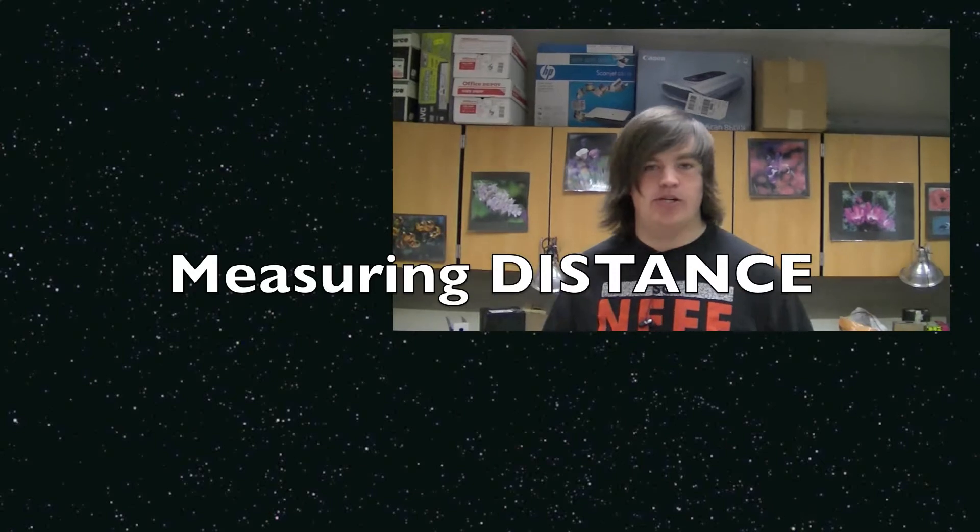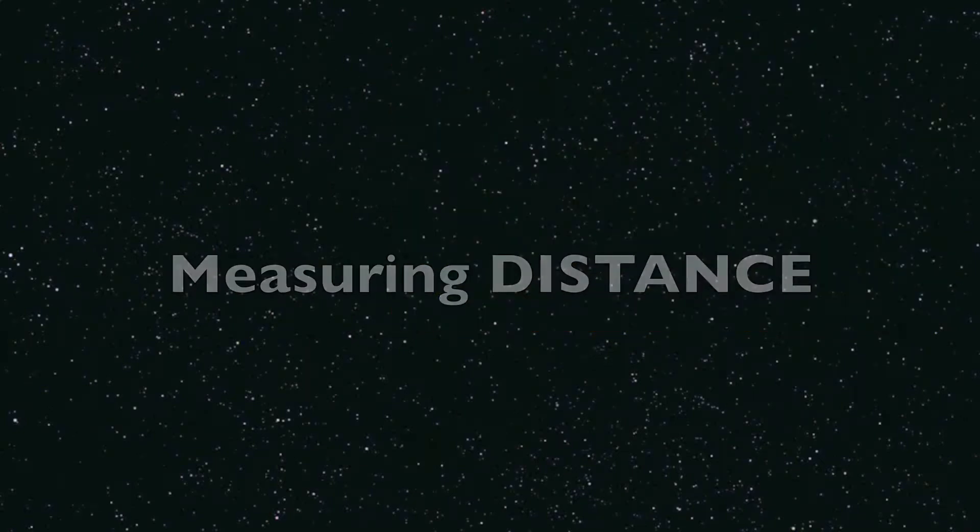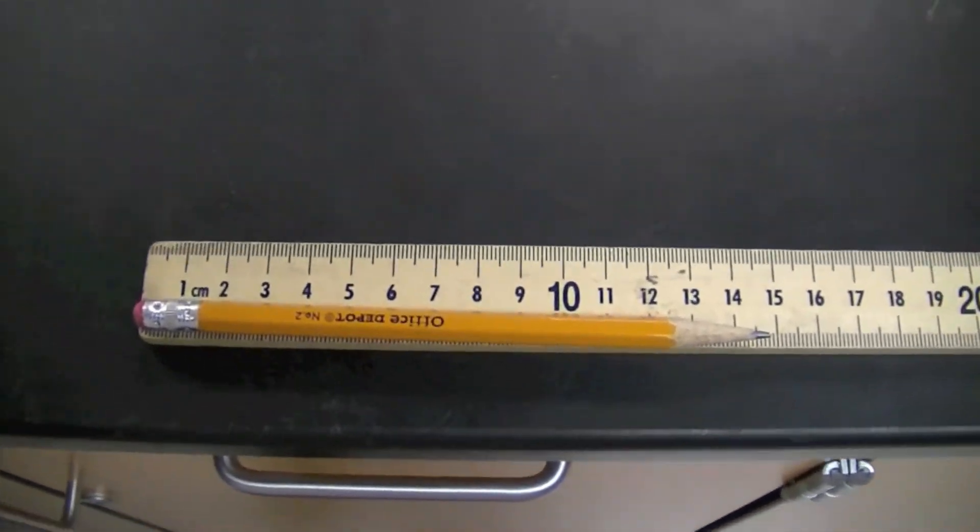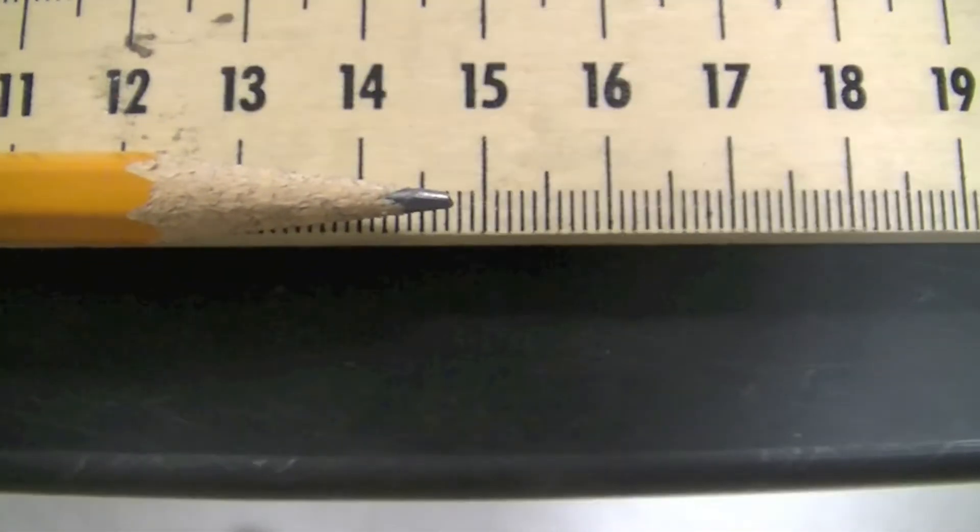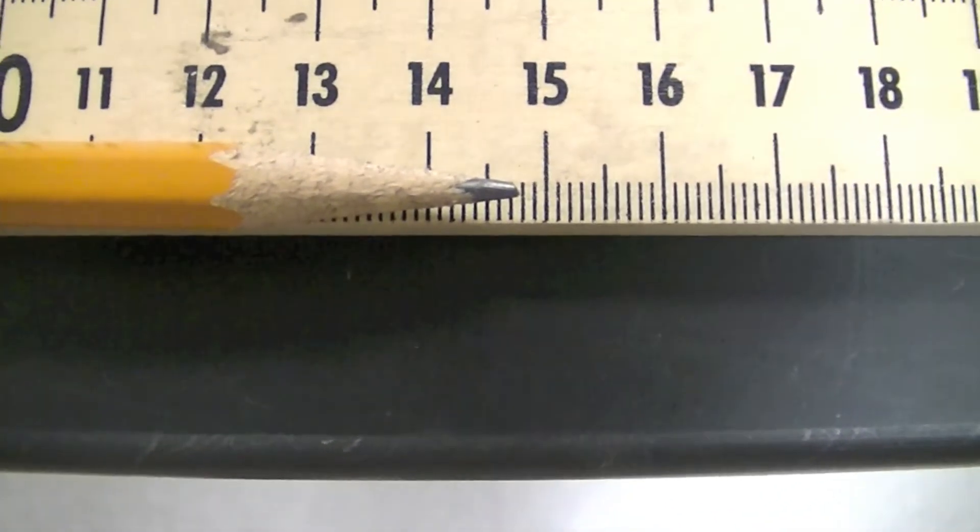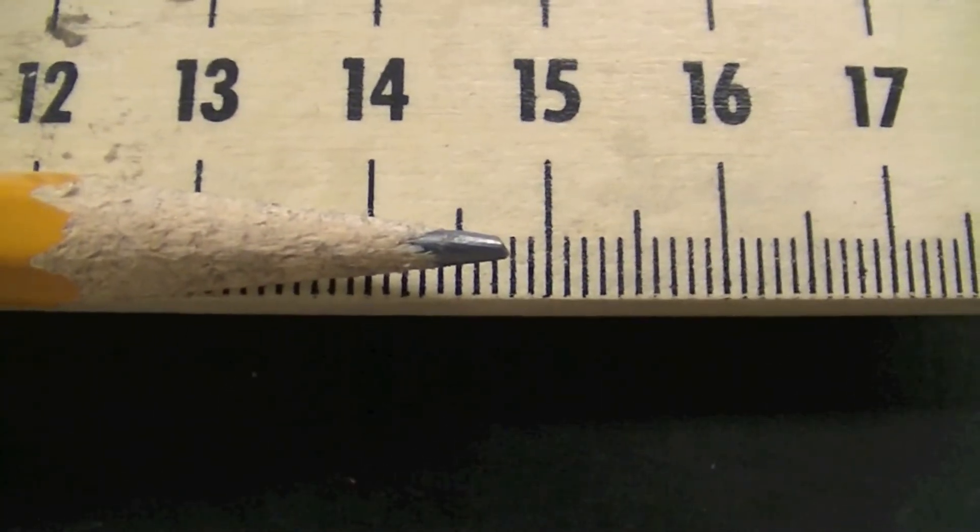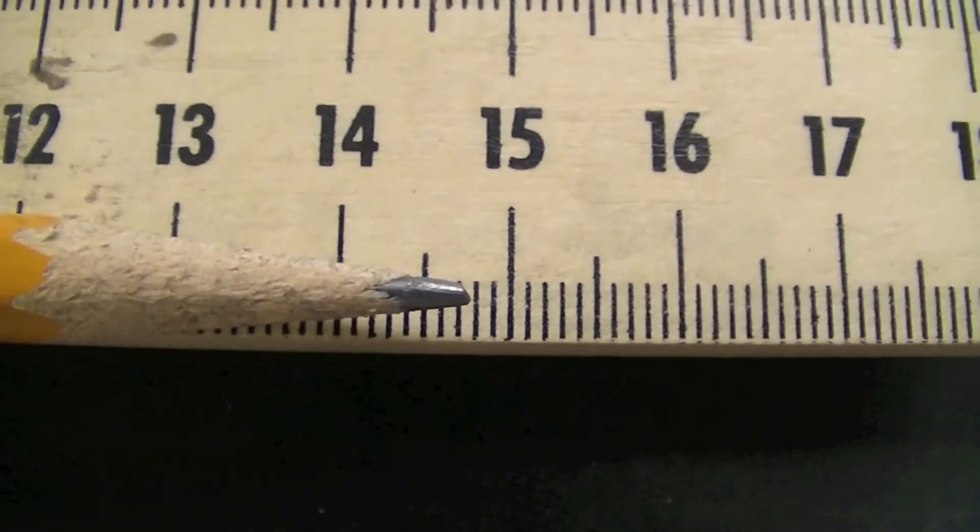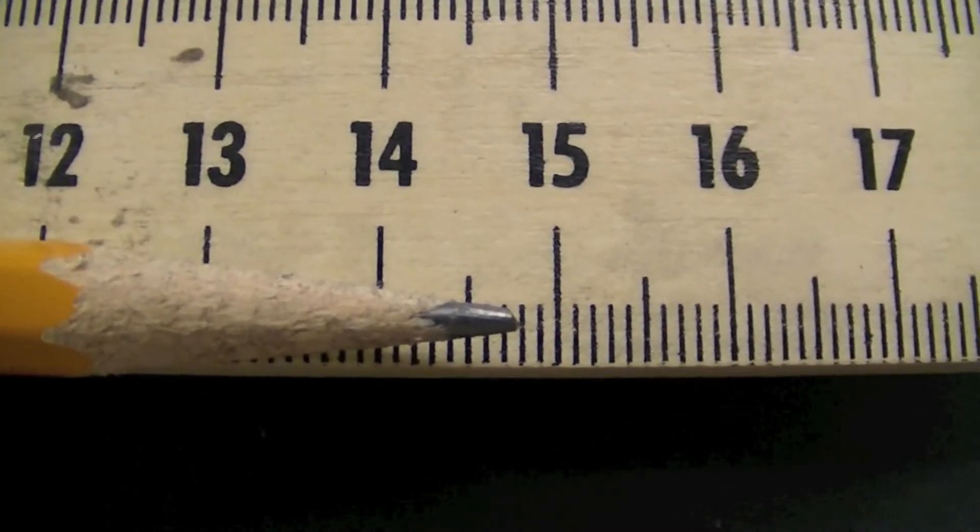So now we're going to talk about measuring. As an example, let's measure this pencil. As you can see, it looks about 14.7 centimeters. Well, we don't know for sure. It could be 14.8. So what we're going to do is round the last digit, we're going to guess. And to me, this looks like 14.78 centimeters.